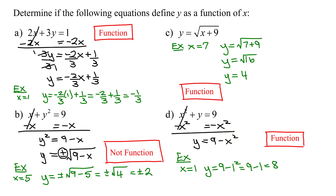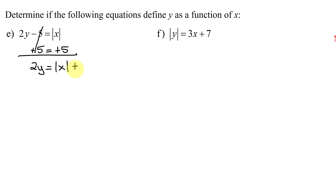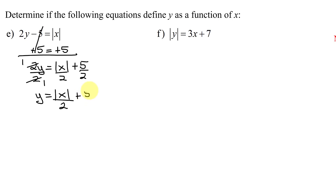In part E, the equation is 2y - 5 = |x|. Solving for y, I add 5 to both sides to get 2y = |x| + 5, then divide each term by 2, giving y = |x|/2 + 5/2. The absolute value of a number is just one number, and dividing by 2 and adding 5/2 gives just one value, so it looks like one x will give one y.